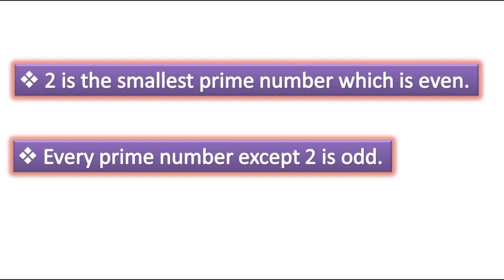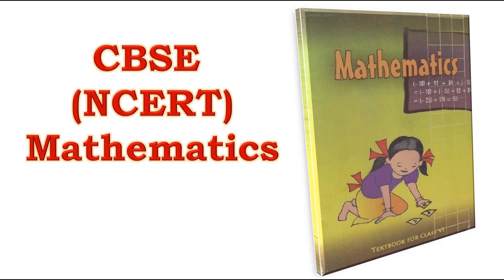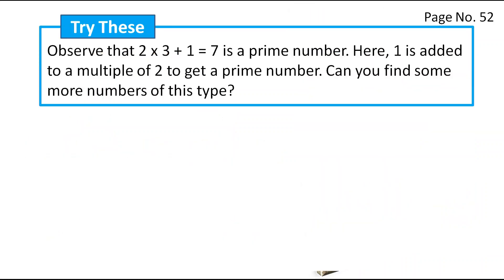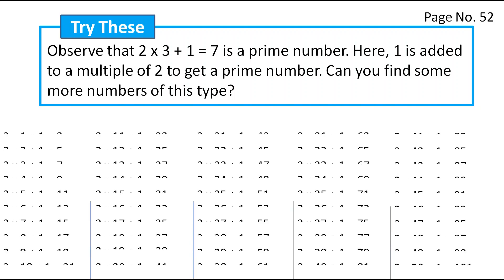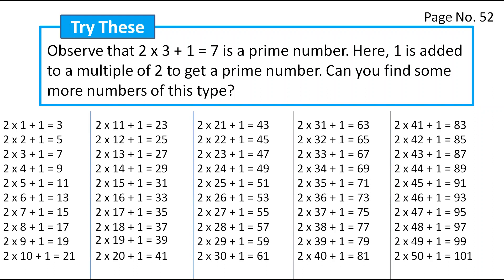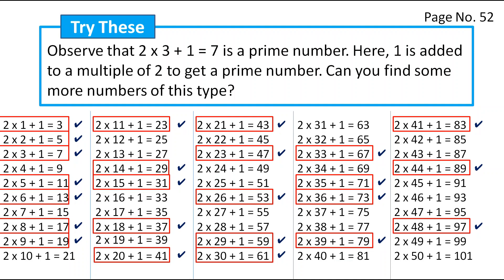In the NCERT Mathematics textbook for CBSE Grade 6, on page 52, there is a 'Try This' question: observe that 2×3 + 1 = 7 is a prime number, where 1 is added to a multiple of 2. Can you find more numbers of this type? When we multiply 2 by any number and add 1, we always get an odd number, but not always a prime number. Only sometimes do we get a prime number — those cases are highlighted. Otherwise, we just get an odd number as the answer.